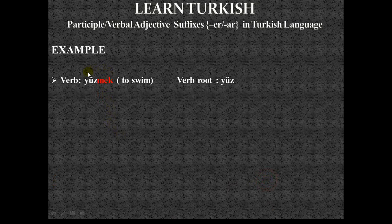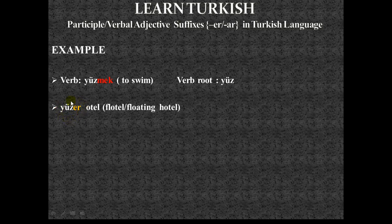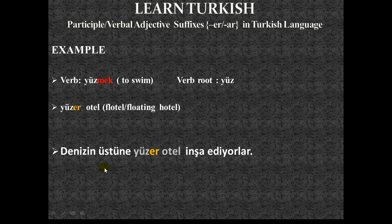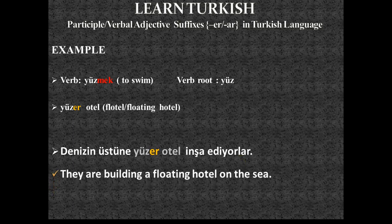Our verb is 'yüzmek,' to swim. The verb root is 'yüz.' We add the -er suffix to get 'yüzer,' meaning floating. The noun described here is 'otel' (hotel), giving 'yüzer otel' — floatel or floating hotel. Example: 'Denizin üstüne yüzer otel inşa ediyorlar' — They are building a floating hotel on the sea.